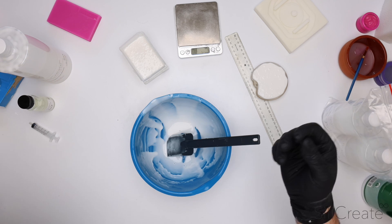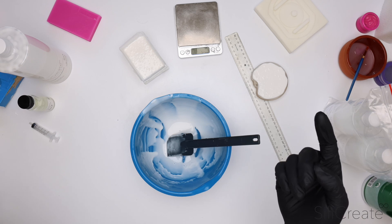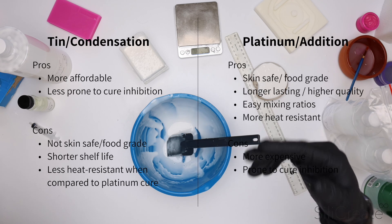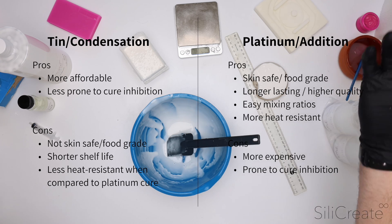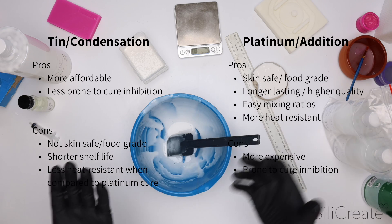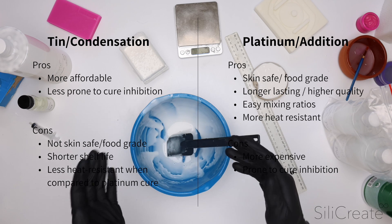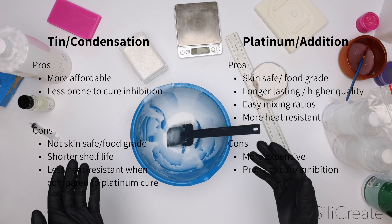To wrap it all up: tin cure silicons do release byproducts and that means that they won't be skin safe and won't be food grade. They also don't last quite as long, but they do cure against everything and they're a lot cheaper. If we compare that with platinum cure, platinum cure can be food grade and skin safe. The molds do last a bit longer, and in my opinion it's a bit easier to work with with the one-to-one mixing ratio. It does however cost more, and you can have issues with cure inhibition depending on what materials you're molding against.